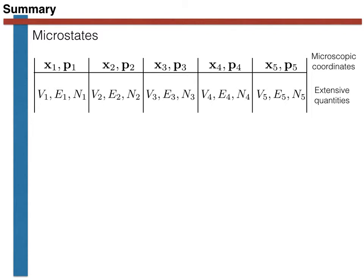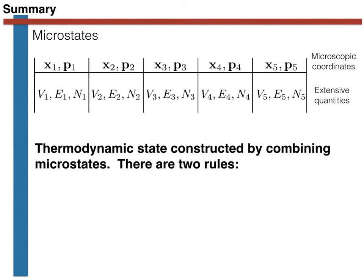The question you are hopefully asking yourself is: what are thermodynamic states? That is to say, what does it mean microscopically when we say in classical thermodynamics that the state of the system is characterized by a particular set of thermodynamic variables? The answer is twofold. We construct a thermodynamic state by requiring two things of our set of microstates. The first comes about because we fix some of the extensive variables — we might, for example, fix the number of atoms in the system and not allow the system to occupy microstates with different numbers of atoms.